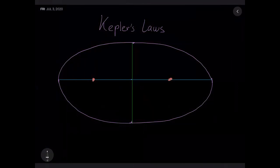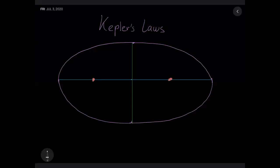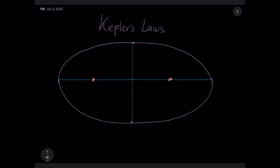You might be familiar with Newton's three laws of motion. In astronomy we have a counterpart: Kepler's laws of planetary motion, which describe how planets move. The first law is that planets move in an ellipse.